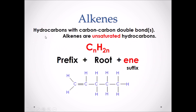Alkenes are hydrocarbons with a carbon-carbon double bond. Alkenes are considered unsaturated hydrocarbons because they don't have the maximum amount of single bonds between carbons. The moment there is a double bond in the structure, it is now an alkene. To find the number of hydrogens in an alkene molecule, we can use the formula CnH2n. For example, if C had five, we would then have H two times five, which would be H10.